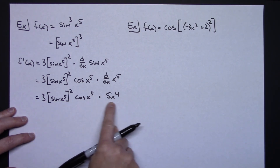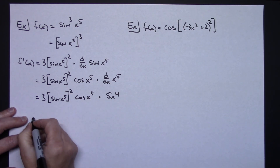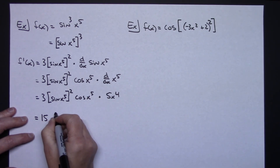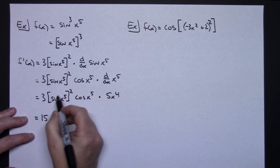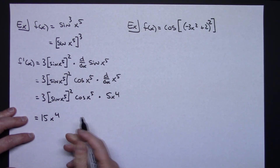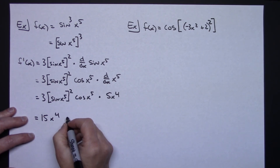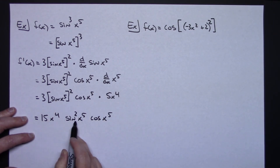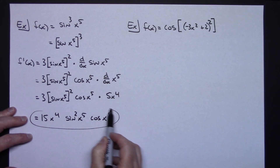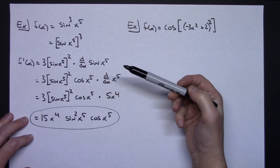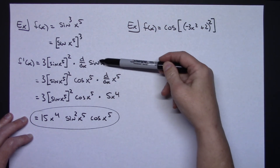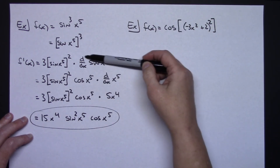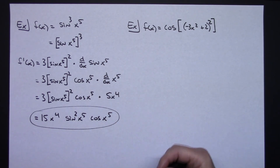Cleaning that up: 3 times 5 gives me 15, so the final answer is 15x to the fourth times sine squared(x⁵) times cosine(x⁵). You can leave the exponent written outside or put the two back above the word sine — either way is perfectly acceptable. This involved two chains, and I highly recommend writing out the d/dx notation each time you have an inside function so you can handle one derivative at a time.